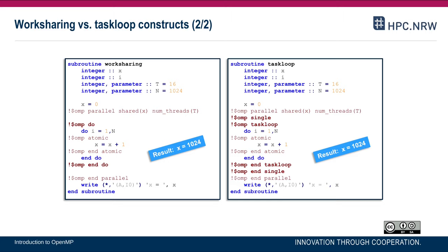When to use worksharing and when to use tasks? You should use tasks if you have a very dynamic or unknown loop load for the individual loop iterations, or when you want to compose parallelism on different levels. But you should use the for worksharing or do worksharing construct from Fortran if there is a loop with a clear memory access pattern — for example, a matrix-vector or vector-vector multiplication — where the worksharing construct can give better performance. The task loop construct supports new use cases like highly imbalanced or irregular loops, but it is not meant to replace for or do worksharing constructs, which are still valid and important.